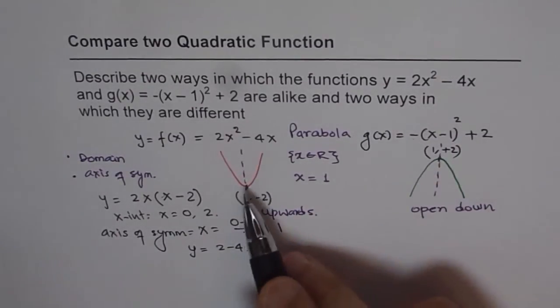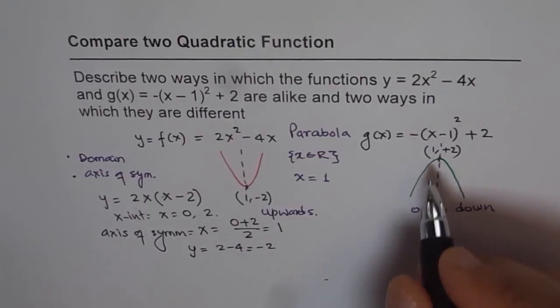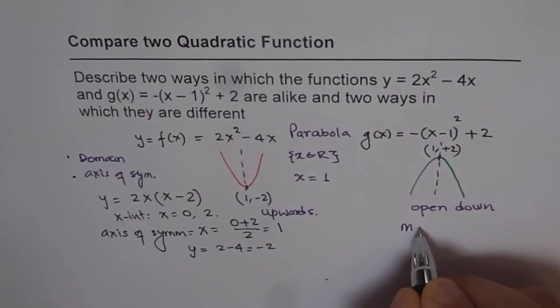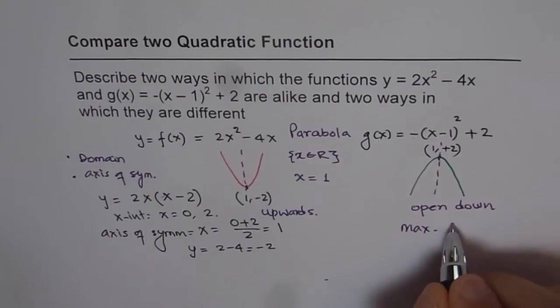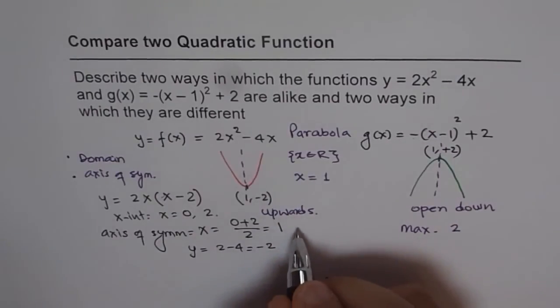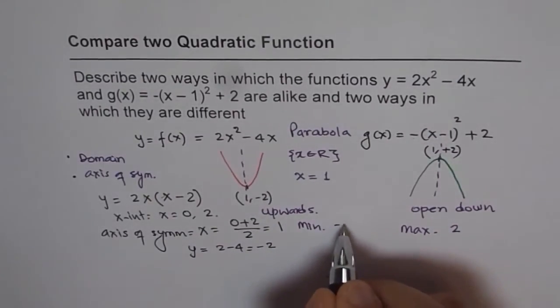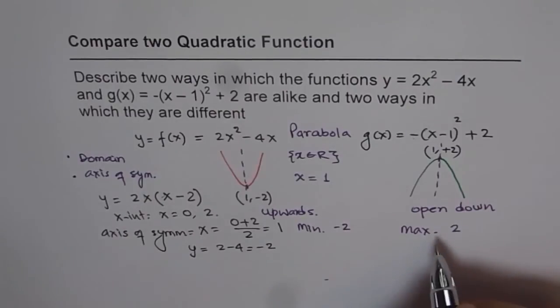Second is their vertex points are different. One has a maximum, the other one has a minimum. So it has a maximum value of 2. And here, we have a minimum value of minus 2.